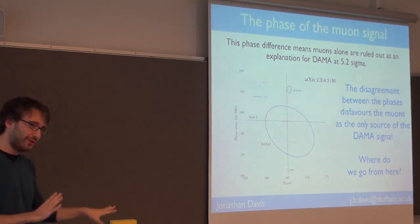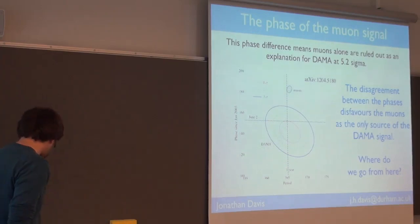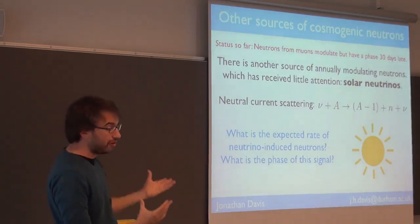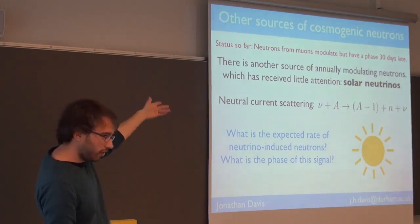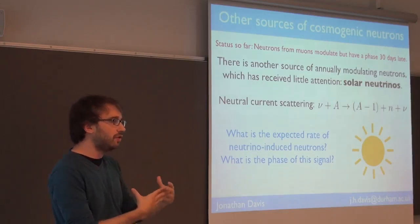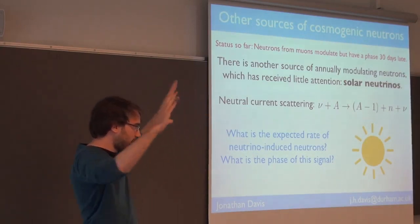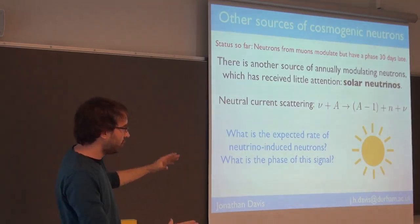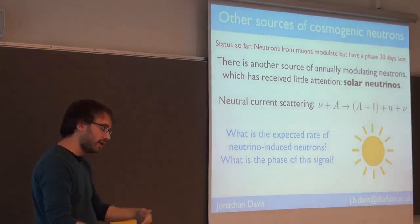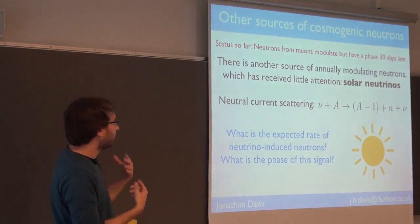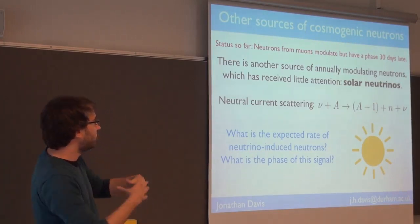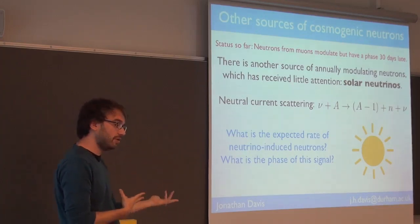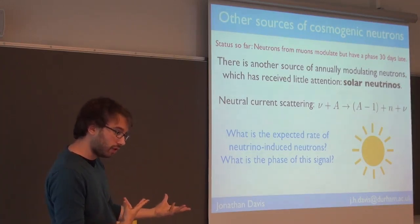Where do we go from here? We have a signal that almost worked but wasn't quite right. Are there any other annually modulated events? Yes — solar neutrinos. The solar neutrinos don't give events directly; they hit nuclei in the targets or shielding around DAMA, releasing neutrons, which then give you events in DAMA. So solar neutrinos are another annually modulating source producing neutrons. Two questions: does it give you enough neutrons, and what phase does it produce the signal with?